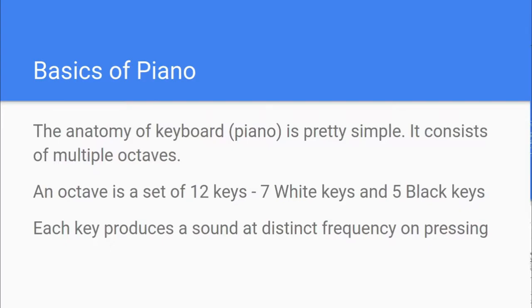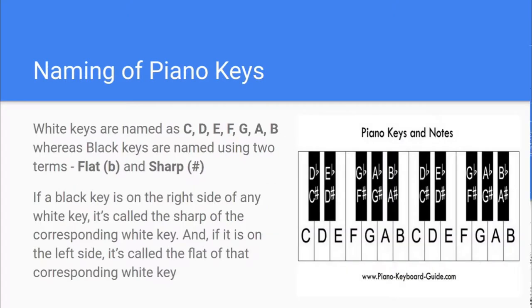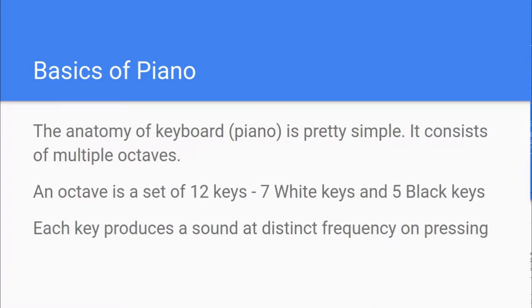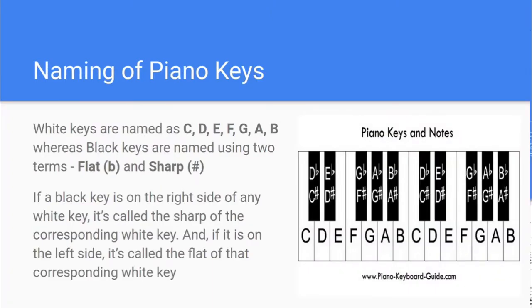First, let's know some basics about piano. The anatomy of a keyboard or piano is pretty simple — it consists of multiple octaves. An octave is a set of 12 keys comprising seven white and five black keys. Each key produces a sound of adjusting frequency on pressing, and when we press multiple keys simultaneously we produce a chord.